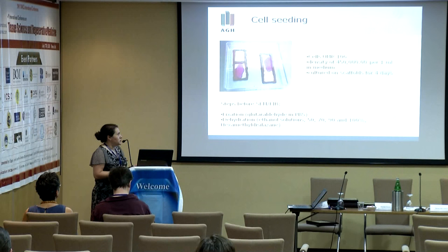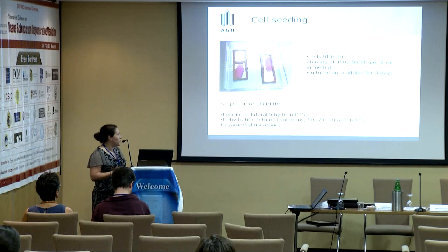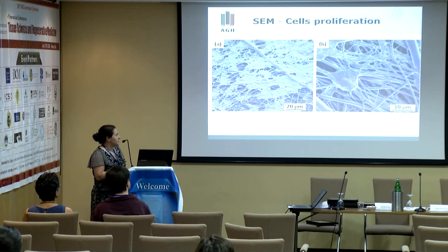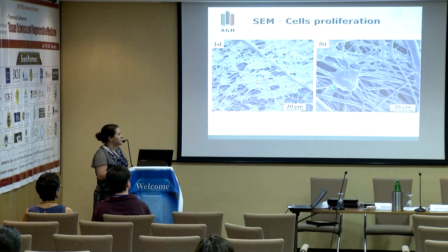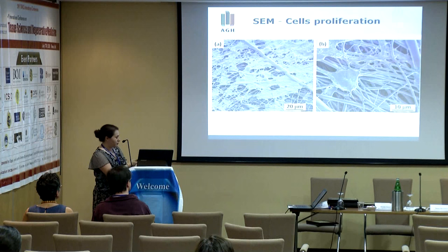In this example we use osteoblast cells. As a standard method for scanning electron microscopy we dry, fixate, and then dehydrate the whole sample. You can see images of cell proliferation from the scanning electron microscopy. With random fibers, the osteoblasts nicely integrate and follow the direction of the fibers, using filopodia to grow into the whole network.